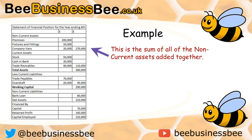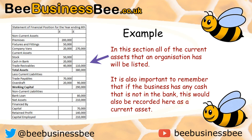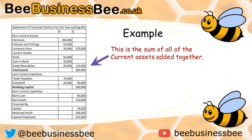In the next section, you'll see all the current assets that an organisation has. Typically you'll find three current assets: cash in bank, which is the best asset you can have because it's cash instantaneously; stock, which isn't a bad asset, though if you want to sell stock quickly you may need to lower your price; and trade receivables, which are people who actually owe you money — customers you've given credit to. Any cash a business has, whether in the bank or in the business itself, must be recorded as a current asset. Adding those three together gives a total current assets figure of £110,000.